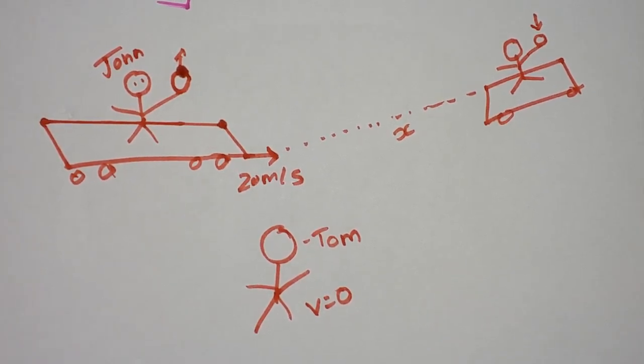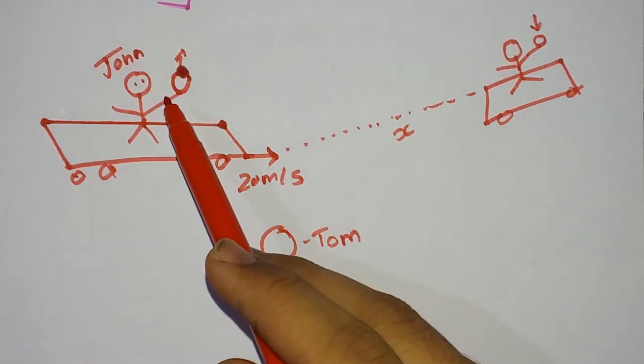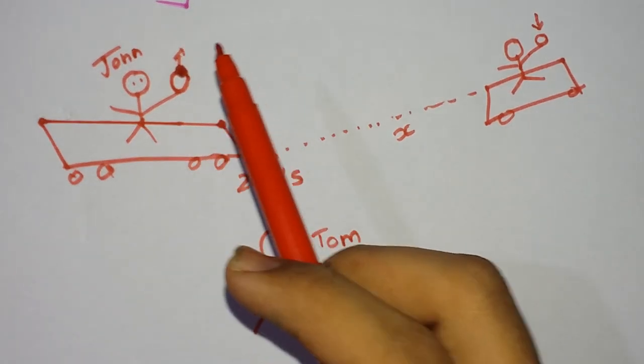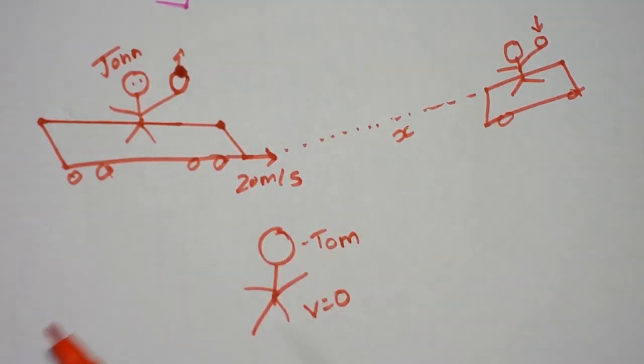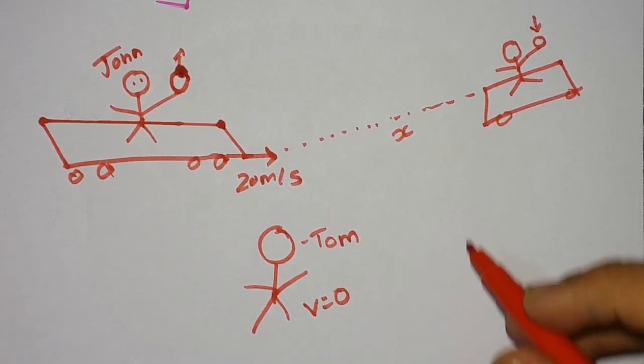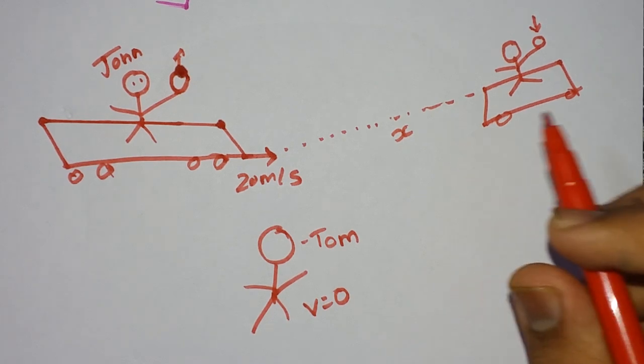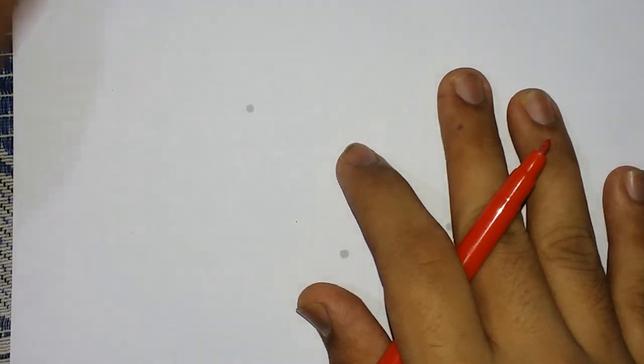John sees the ball going up. Since John is at rest according to his own inertial frame of reference, what is the trajectory of the ball according to John? According to John...